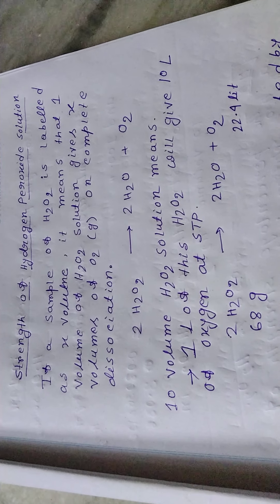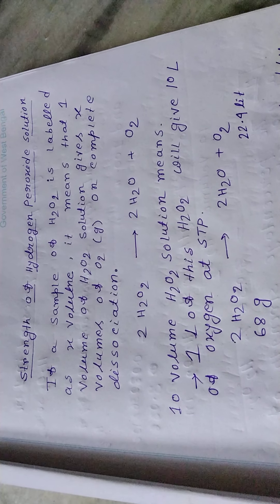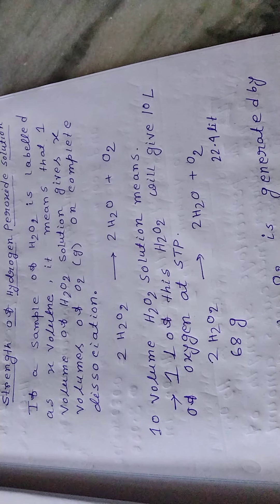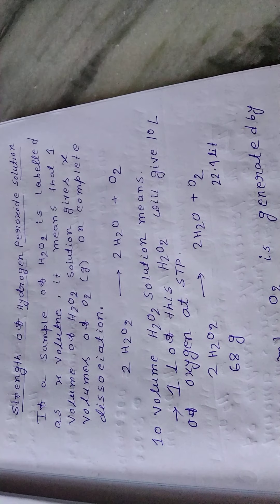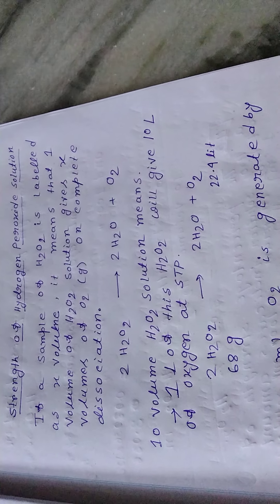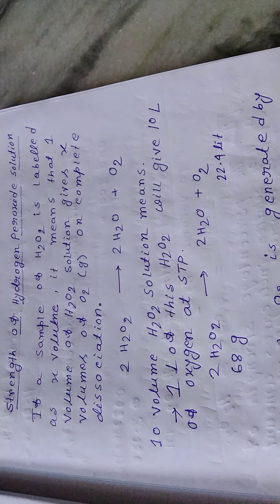Dear students, today I am going to discuss the strength of hydrogen peroxide solution. The strength of hydrogen peroxide solution is generally expressed in two ways: volume strength and percentage strength. Today I will discuss the volume strength, percentage strength, and also the strength of the solution in gram per liter.